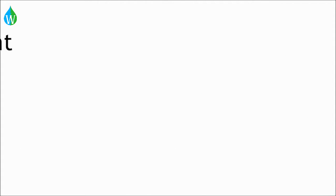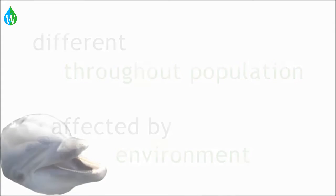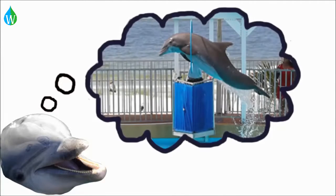Learned behavior is different throughout the population and is affected by the environment. For example, a dolphin can learn to perform and jump through a hoop. This behavior has been affected by the dolphin's environment.